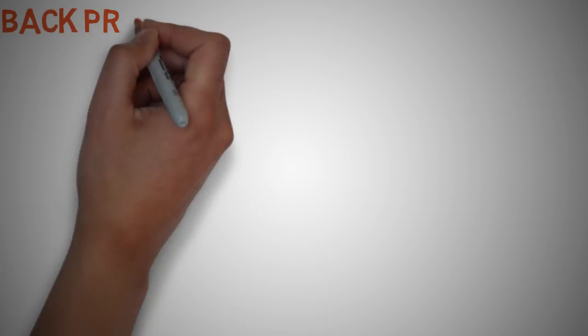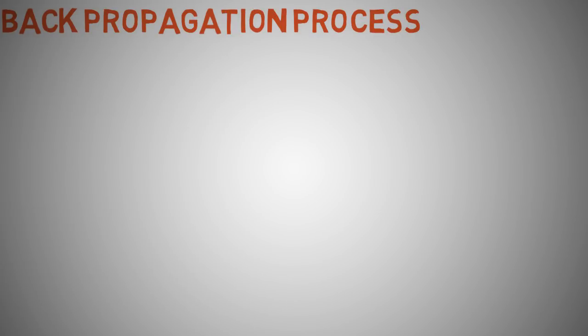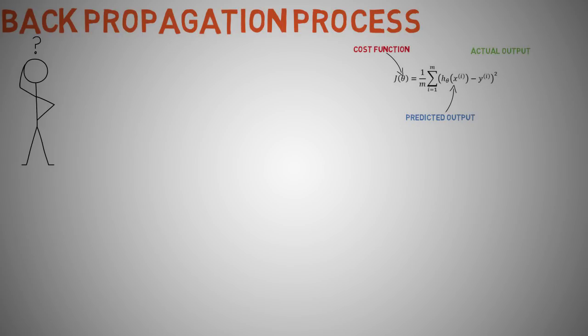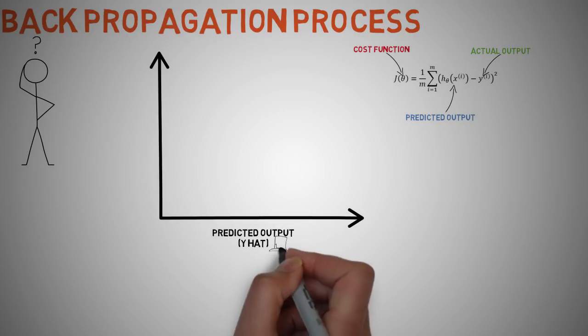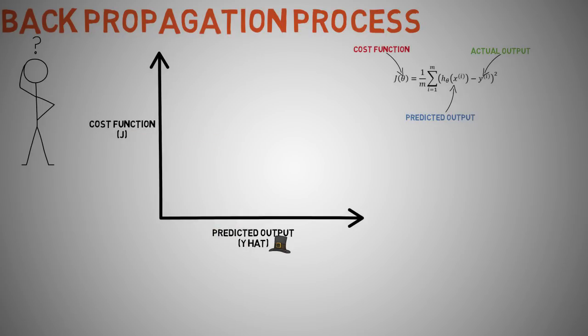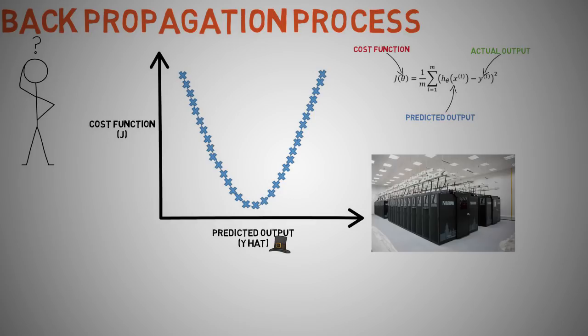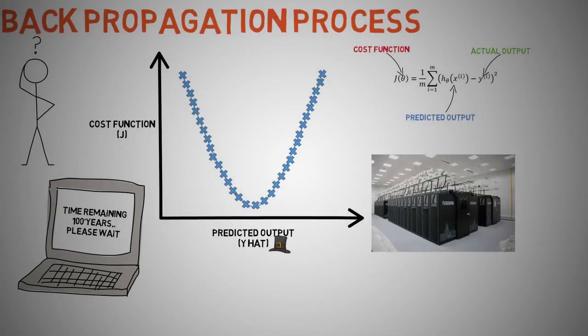Now how do we perform back propagation? Now over here we have our simplified cost function where we find the squared error between the predicted output y hat and the actual output y. We can first plot our squared error function j versus our predicted output y hat. At first thought, you can use the brute force method and try all the variations of the weights within the network and you would get something that looks like a parabola of data points. Easy right? Wrong. Though it may seem very easy, it would require a humongous amount of computing power. Think the fastest supercomputer on this planet. Now it would take that computer over a hundred years to calculate the optimal weights for a relatively small neural network. We need to be smart about this.